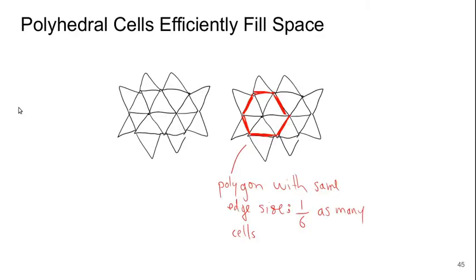Welcome to Part 7 of Lecture 3 of Bluff Body Aerodynamics. Here's a sketch that allows us to see how polyhedral cells efficiently fill space. On the left we see a 2D grid made up of triangular cells.